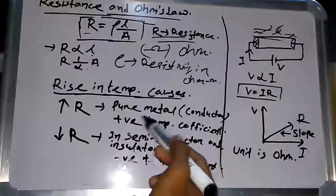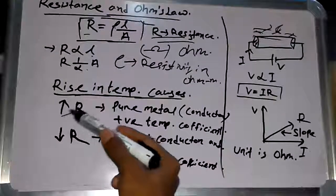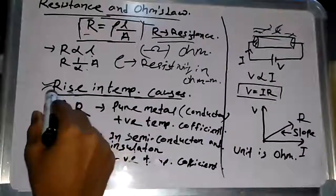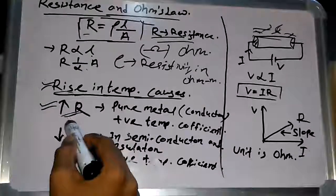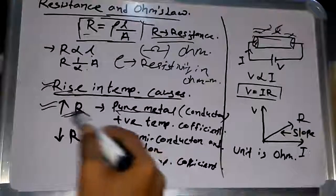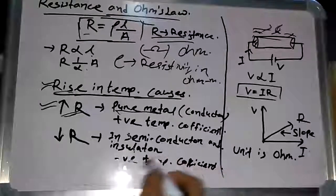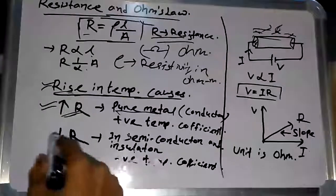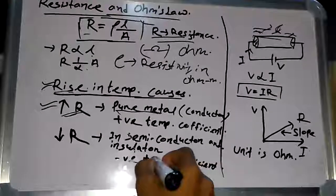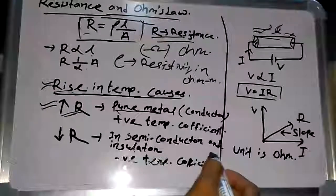A rise in temperature causes resistance to increase in a conductor. For a pure metal conductor, if the temperature rises, the resistance also rises — this is known as a positive temperature coefficient. Whereas in semiconductors and insulators, resistance decreases with increasing temperature — this is the negative temperature coefficient.